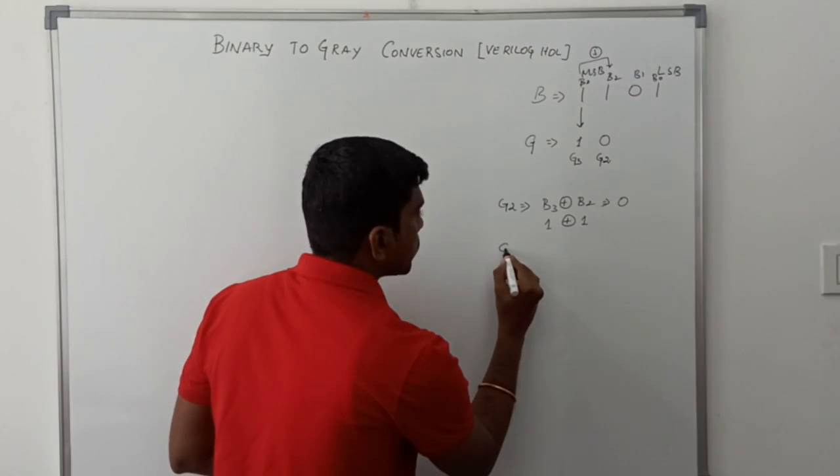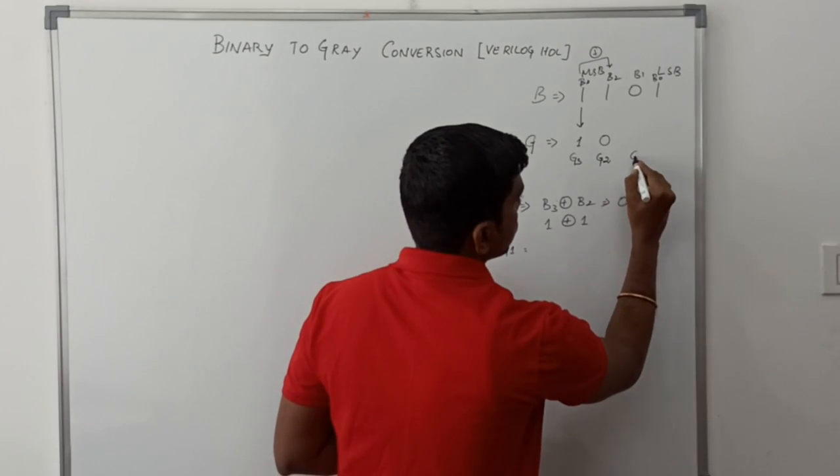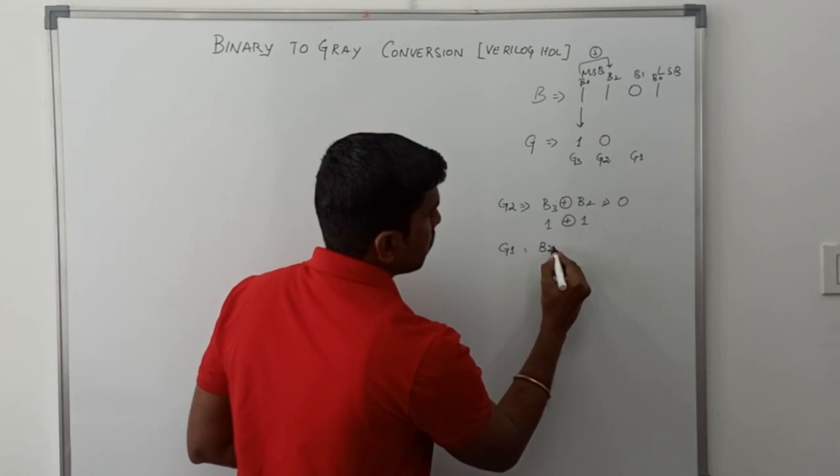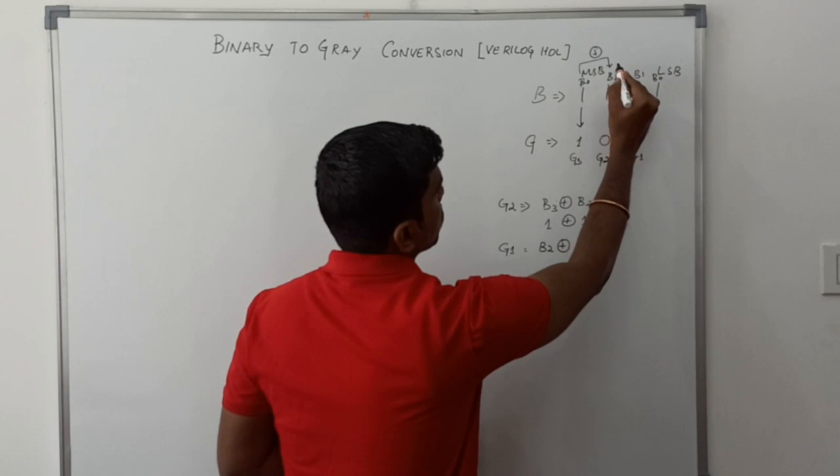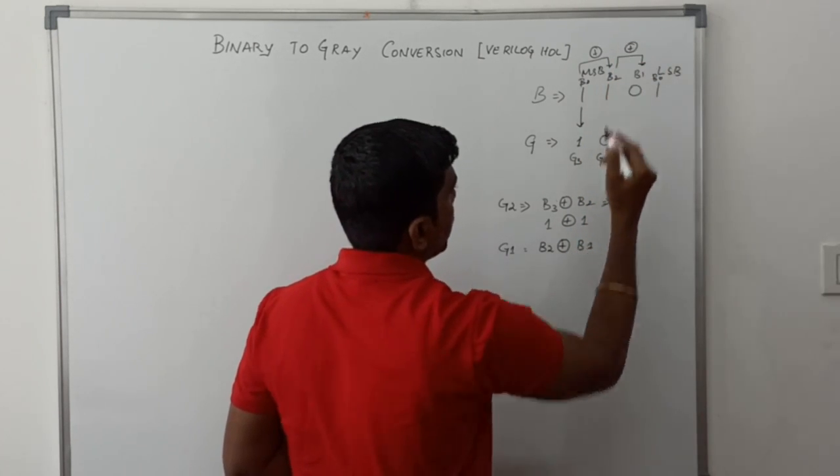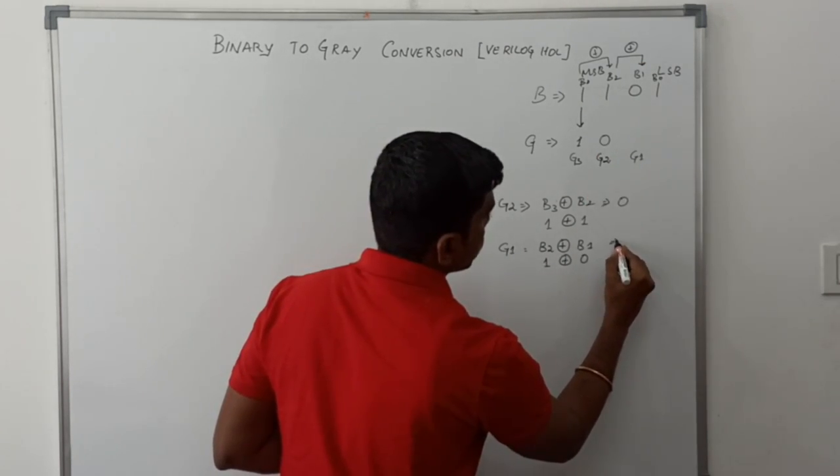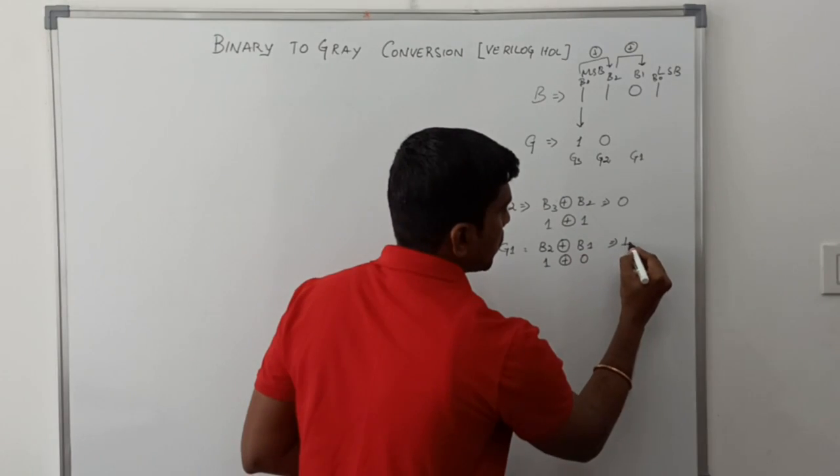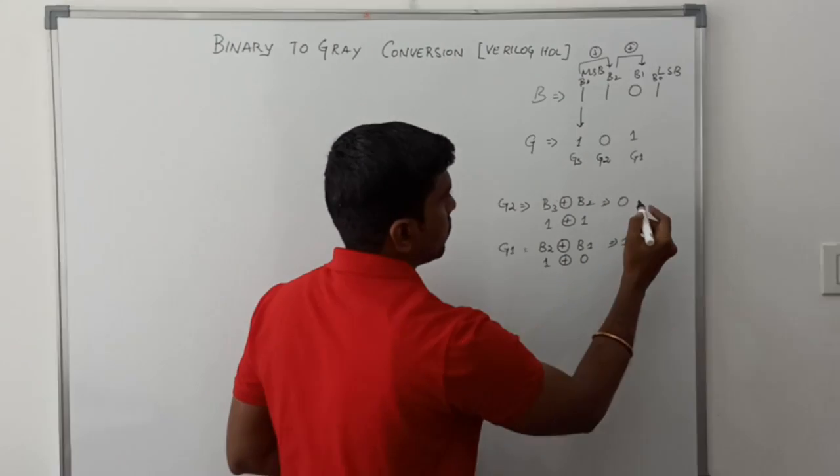So G2 value is 0. Then now we find G1. If you want to find the G1 value, it's B2 XOR B1. So B2 value is 1, B1 value is 0, giving us a result of 1.